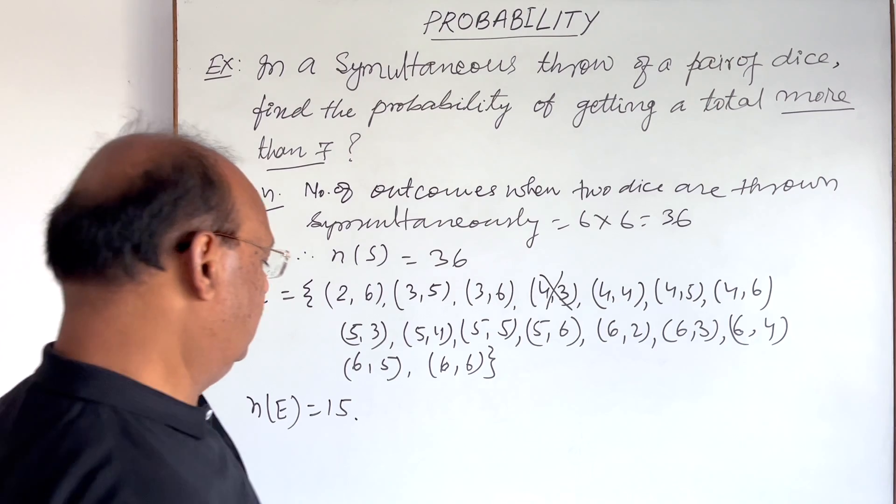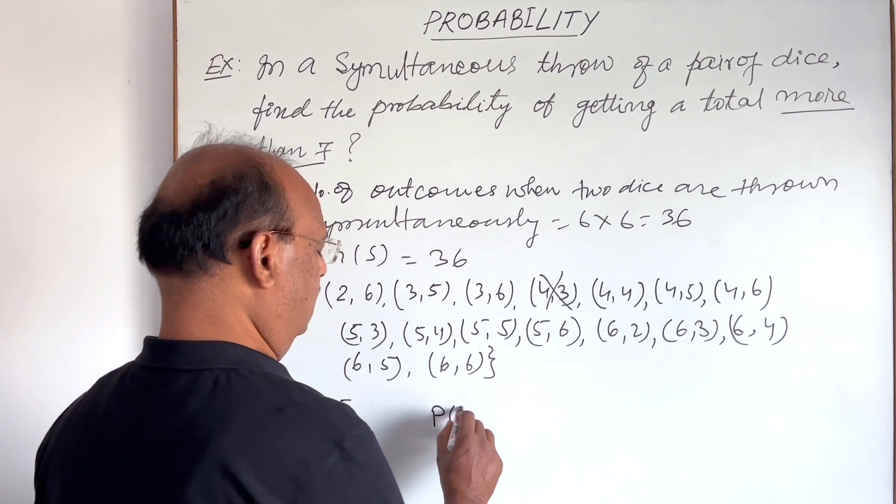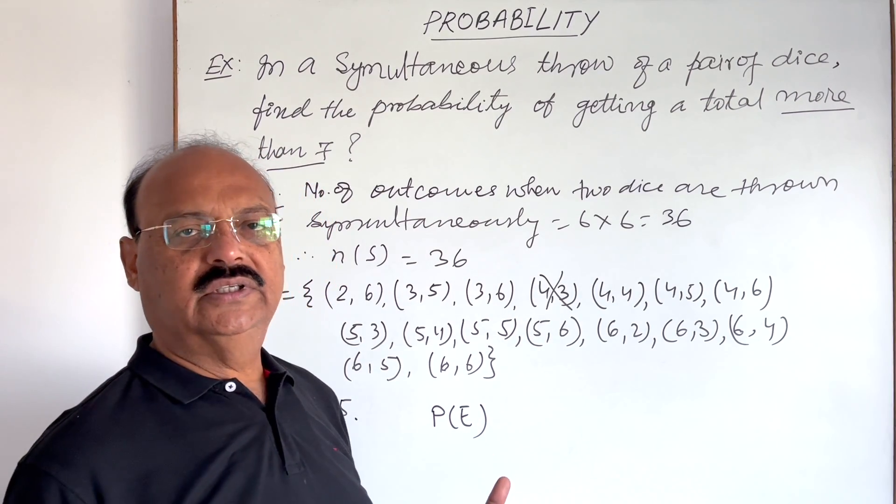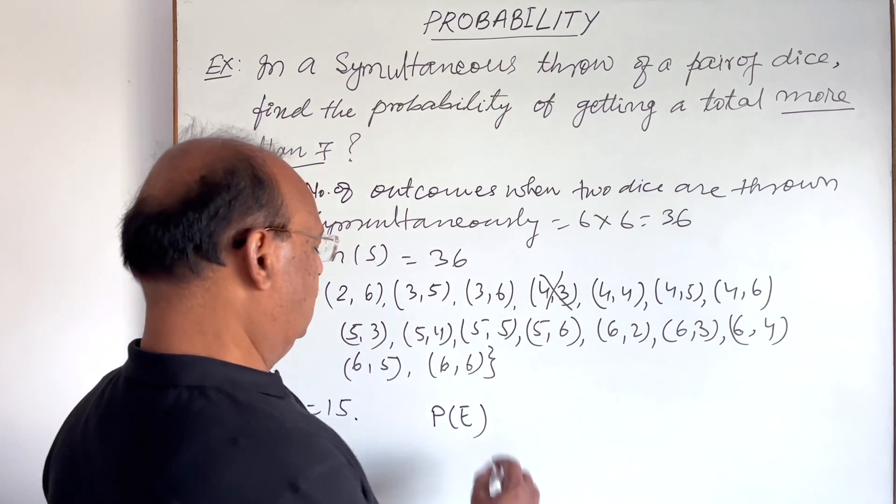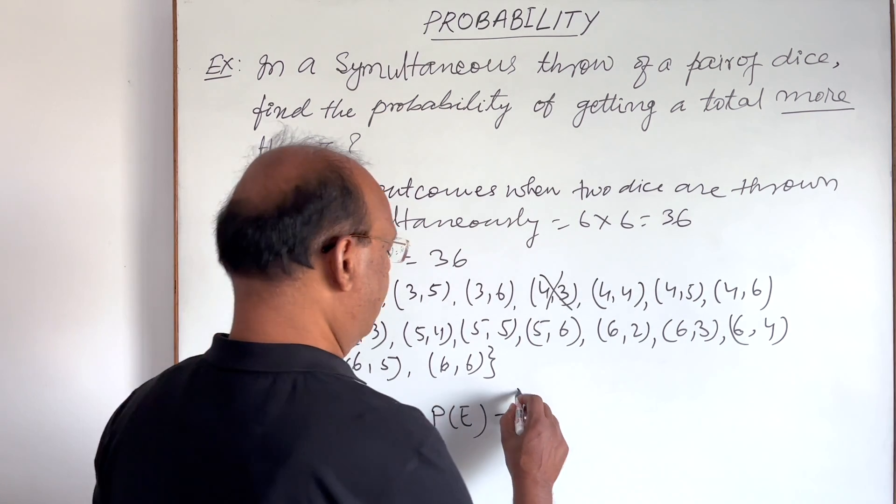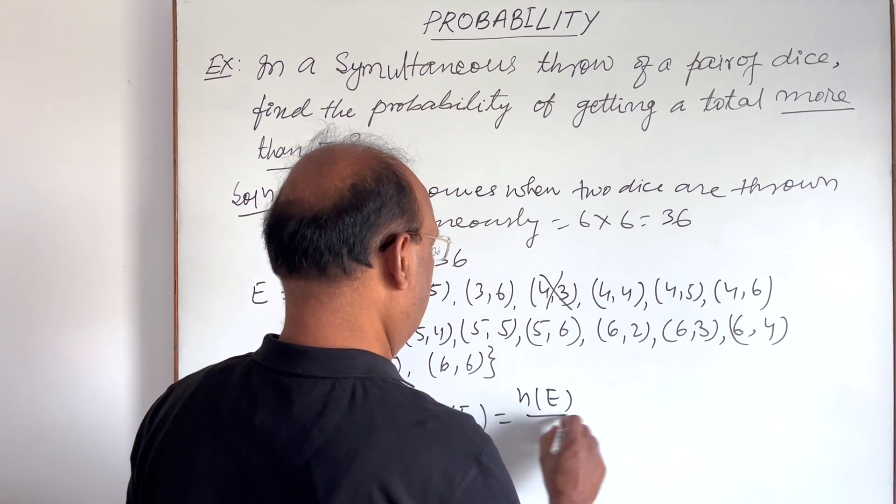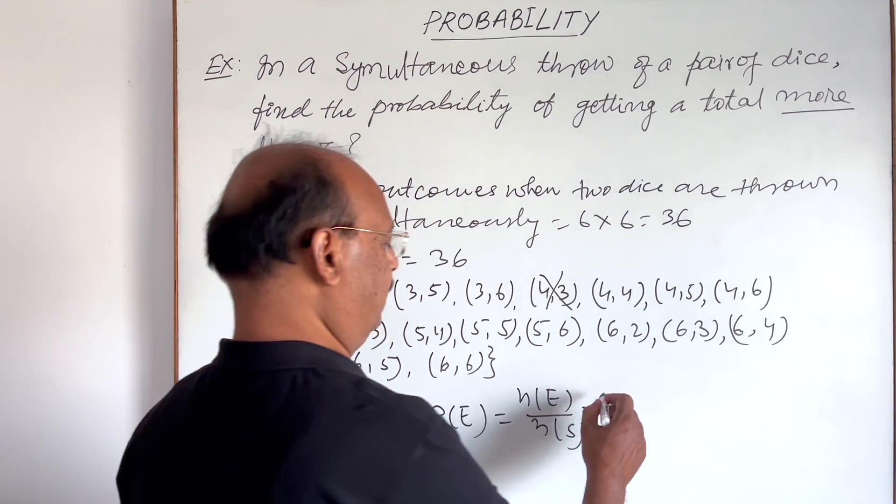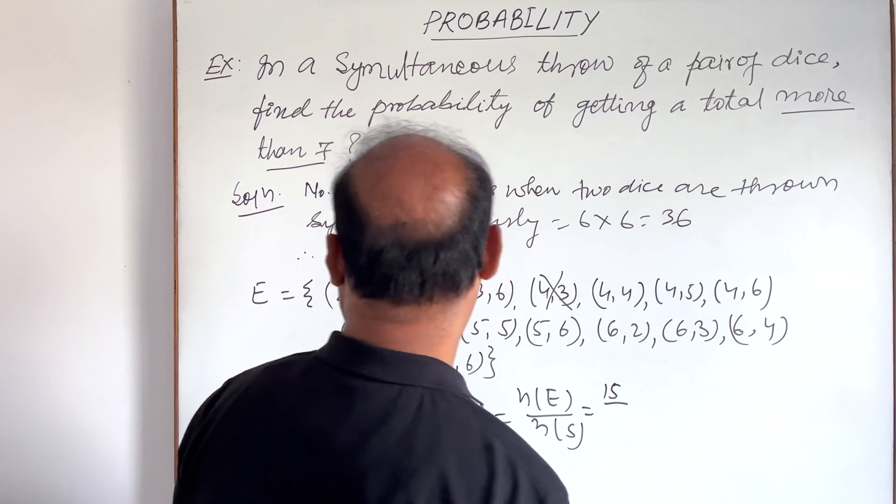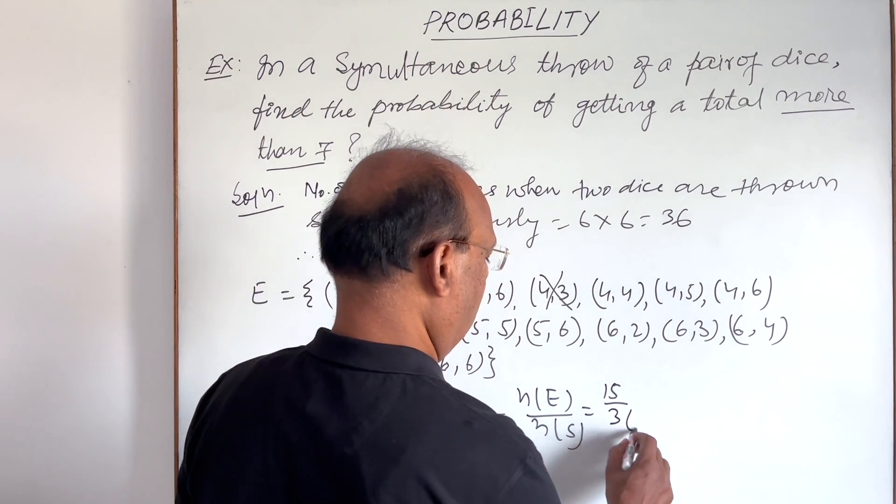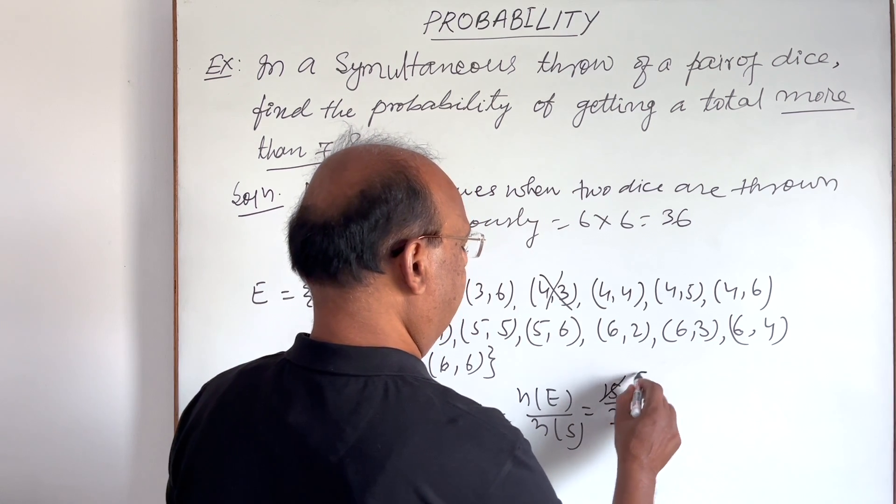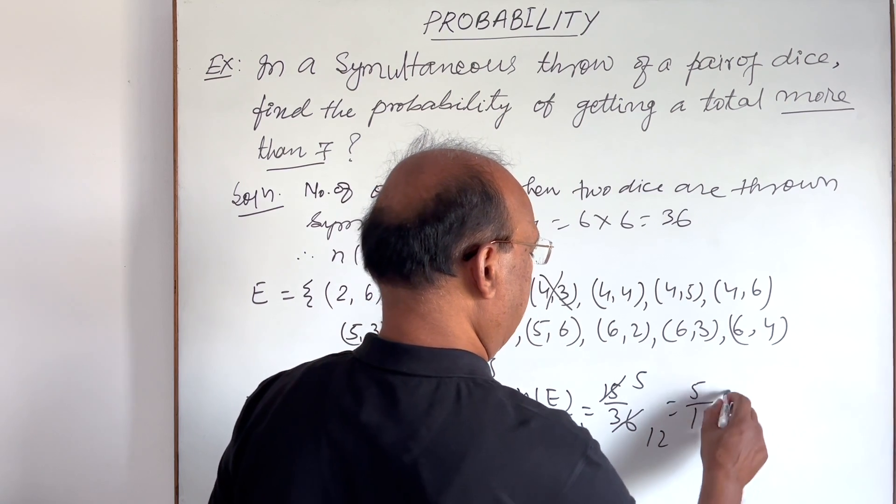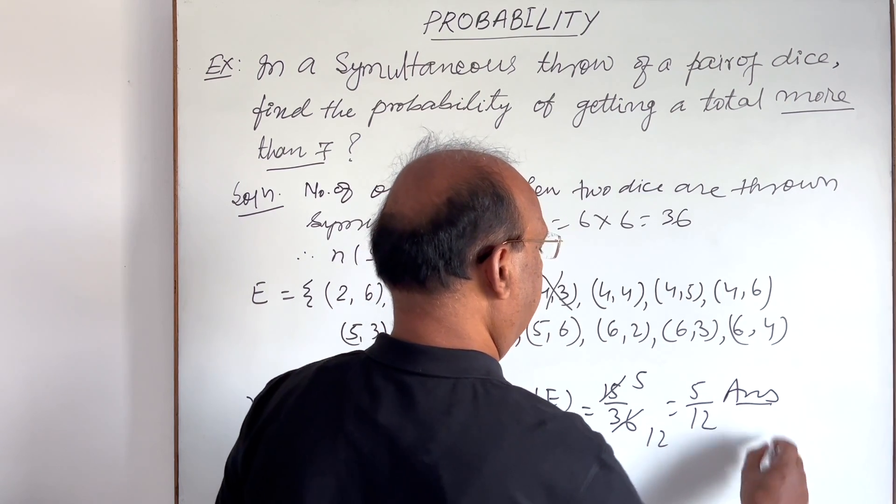So we use the formula here. Probability of E, this is n(E) divided by n(S). So n(E) is equal to 15, and n(S) is equal to 36. Cancel out with three: three, five, twelve. So this is equal to five by twelve. So this is the required answer.